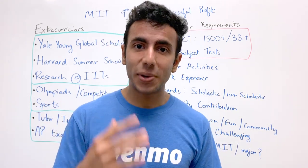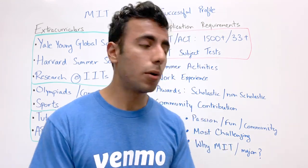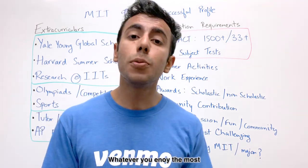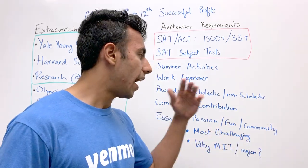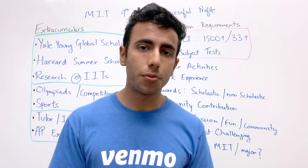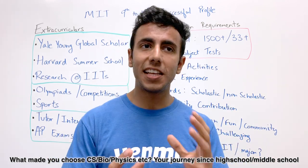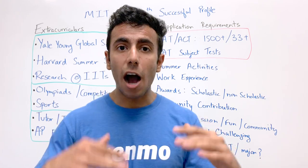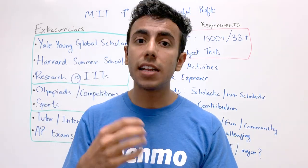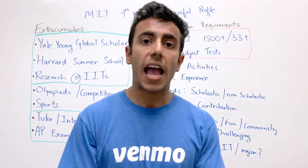Now the most important factor: the essay. MIT has five questions — two short answer and three long answer. They ask about your passion, what you do for fun, community involvement, the most challenging project or task you've accomplished, why you chose MIT, why you chose your major, and your journey — how you became passionate about computer science, biology, physics, etc. They want to know your interests and where you want to go, whether in STEM or non-STEM.